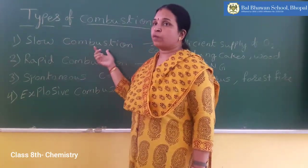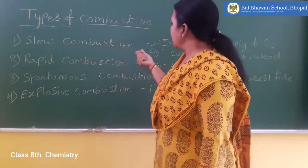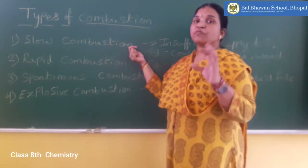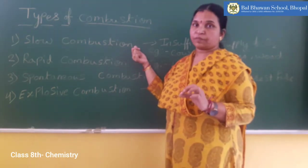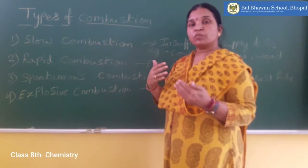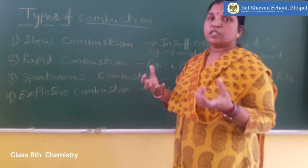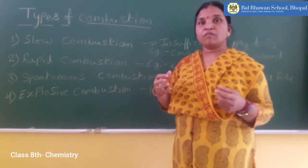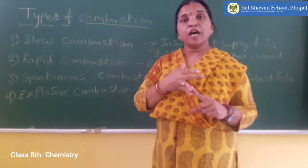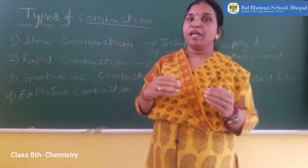The first one is slow combustion. Slow combustion is observed when there is insufficient supply of oxygen. When oxygen is not supplied properly, the combustion process is very slow. The combustible material will burn slowly. When it burns slowly, the amount of heat and energy produced by the combustible substance will be less.